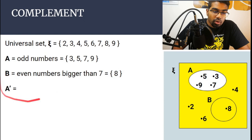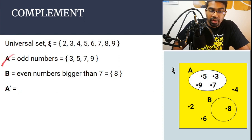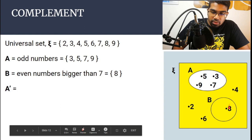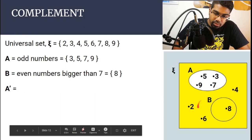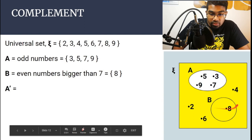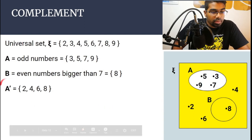Now let's find the complement of A. A prime represents the complement of A, and A prime is everything outside of A. So it includes set B as well as those elements that don't belong to any particular set. The numbers here are 2, 4, 6, and 8, so A prime equals {2, 4, 6, 8}.